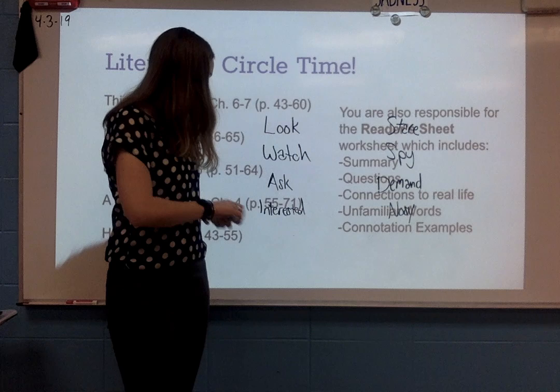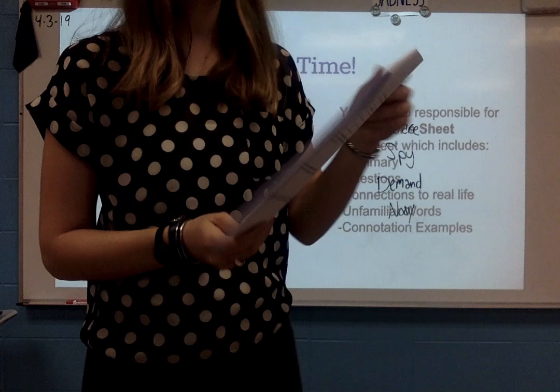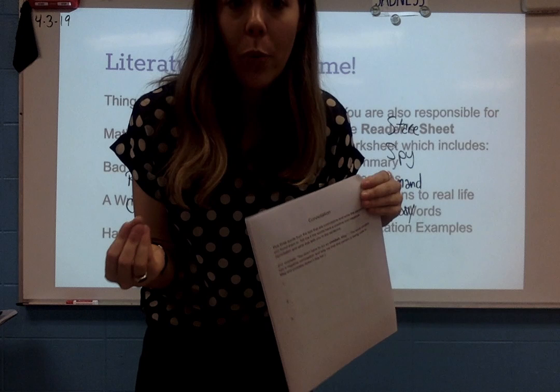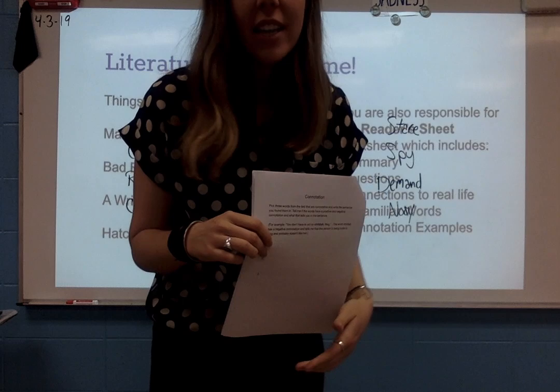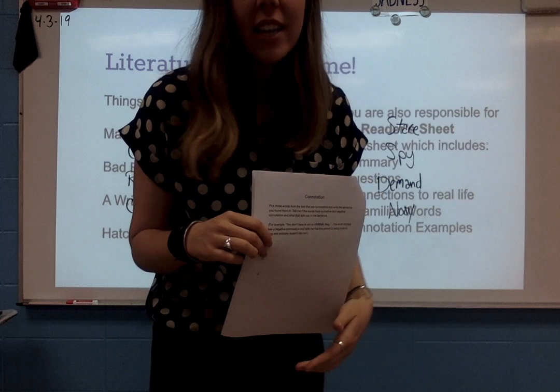All right. So on your reader's sheet today, on the back of it, you have your connotation page. You are going to pick three words out of the text that you think are connotative — that have an emotional meaning to go with them. Give me the sentence you found it in, then say this word here, circle it or underline it, is positive — it shows a positive connotation and here's how I know. Or, I think it's really negative and here's how I know. I've given you an example, but I want you to come up with three more yourselves. Don't forget to put your books back when you're done.